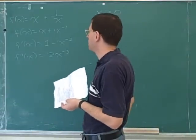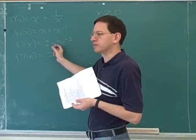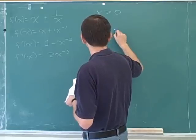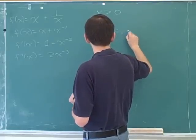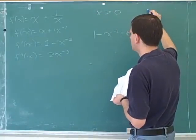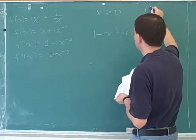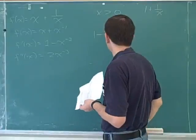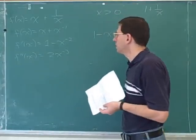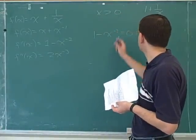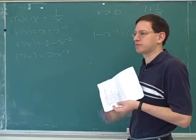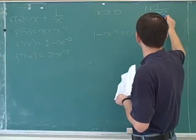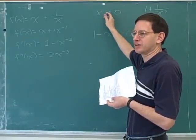How do you find the critical point? By setting the first derivative equal to zero. You can also have a critical point where the first derivative is undefined, so you also have to look for places where the first derivative is undefined. But the only place this is undefined is when x is zero, and that's not in the range that we're looking at.